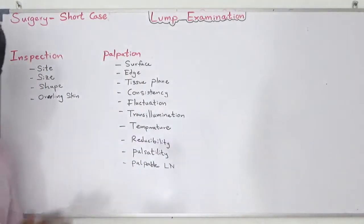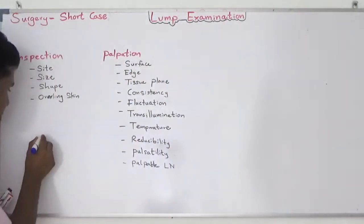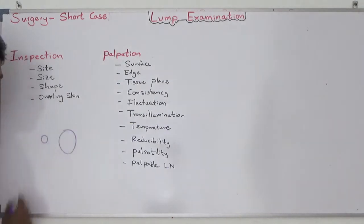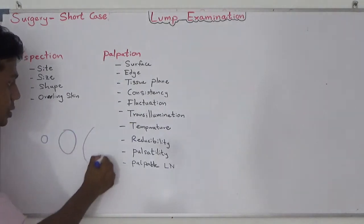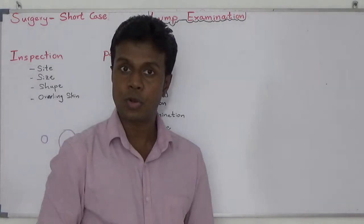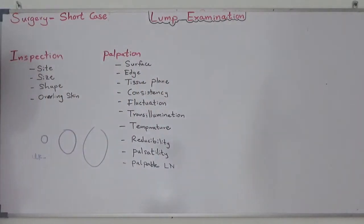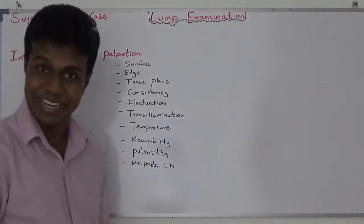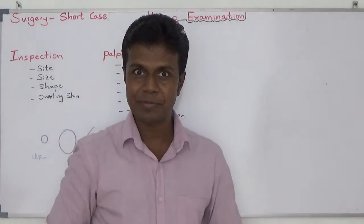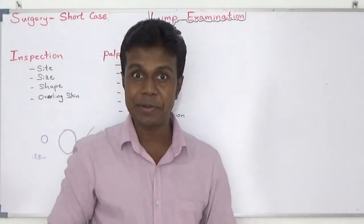Number two: size. How big is it? It can be small, medium, or a large huge lump. Don't try to say UK size 6, 10, or 16. Try to say the exact centimeter measurement.